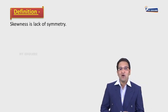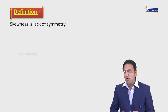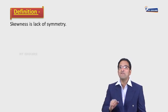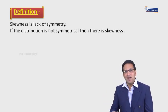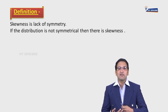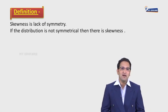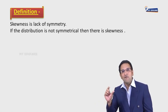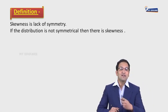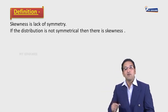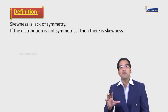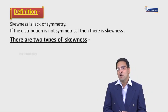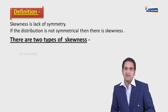Skewness is lack of symmetry. What do you mean by symmetry? If the distribution is not symmetrical, then there is skewness. A word is used here: symmetrical. Symmetry ka matlab mein aage bolne wala ho. Now, there are two types of skewness in this chapter.